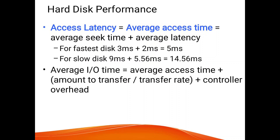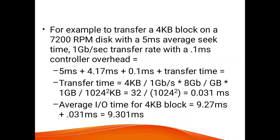Hard disk performance is measured by access latency. Access latency is calculated by the formula: average access time equals average seek time plus average latency. The average I/O time is defined as average access time plus the amount to transfer divided by transfer rate, plus controller overhead. Performance is measured by this overall effectiveness.